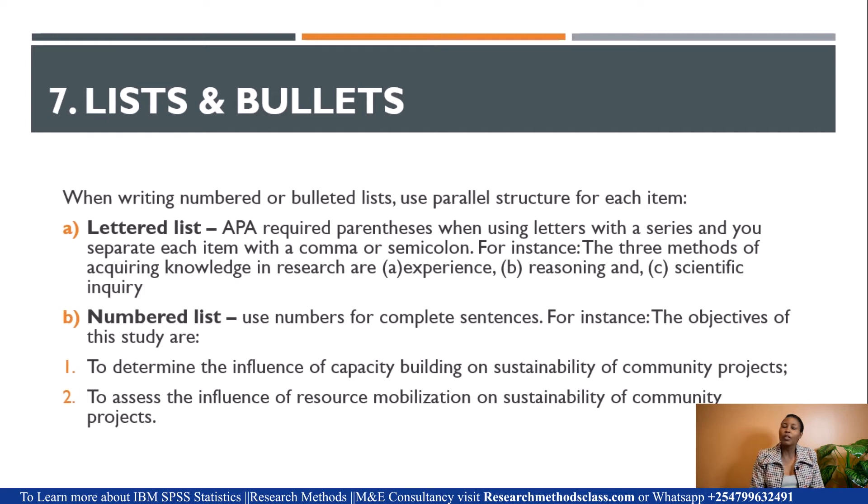For numbered lists, you use numbers for complete sentences. For instance, when you want to state the objectives of the study, you cannot use Roman numerals because Roman means it is not a complete sentence, it's a continuation of a sentence. But when you want to list objectives, because each objective represents a variable of the study and is complete in itself, then you use numbering like we have shown here: to determine the influence of X and Y, you use numbering.